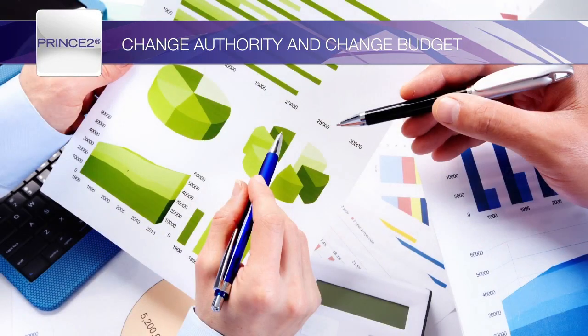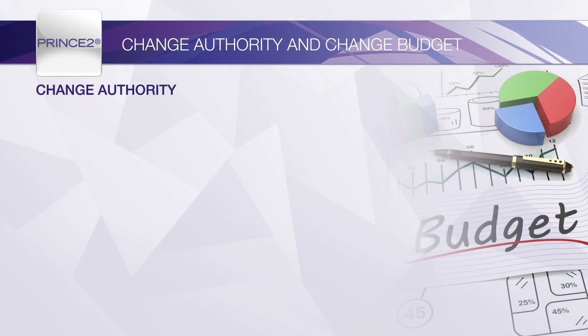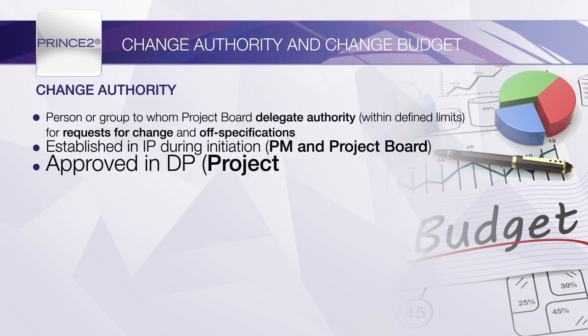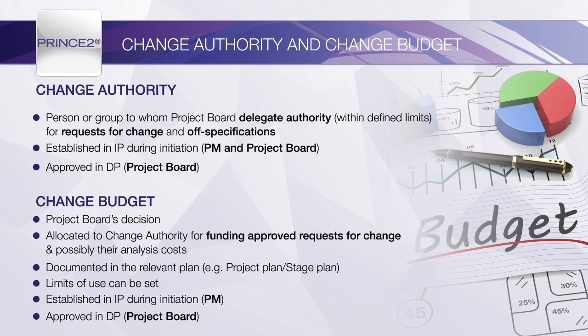Where it is anticipated that there could be many changes during the project, the Project Board might look to appoint a Change Authority to authorise changes on its behalf. The Change Authority role can be allocated to more than one person. For example, the Project Manager could be given authority for changes relating to work packages, while somebody in a Project Assurance role could decide on stage or even project-level changes. The Project Board can also put restrictions on the number of changes to any products or the value of the changes in any one stage. A Change Budget is a sum of money that can be used by the Change Authority to fund changes. Details of the Change Authority and Change Budget should be established during the initiation stage and approved by the Project Board as part of approving the PID.